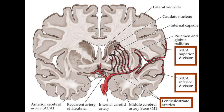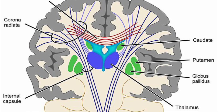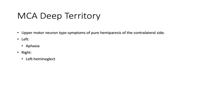Deep territory infarcts affect the basal ganglia and internal capsule. The basal ganglia are important for motor control, executive functions including decision-making, reward and addiction, and habit formation. The internal capsule is a white matter tract, and the primary motor cortex sends its axons through the posterior limb of the internal capsule. Deep territory infarcts cause upper motor neuron-type symptoms of pure hemiparesis on the contralateral side. Large infarcts can also produce cortical deficits such as aphasia for left-sided infarcts and left hemi-neglect for right-sided infarcts.